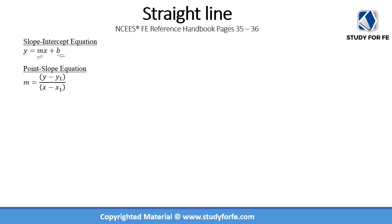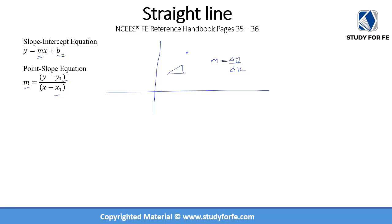A slightly more difficult form of the straight-line equation is the point-slope equation, where you are provided one point and a slope. It requires one extra step in rearranging the equation, but otherwise it is pretty simple. You have m, which is rise over run — delta y over delta x — and you have one point that lies on the straight line.